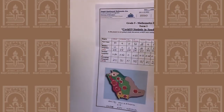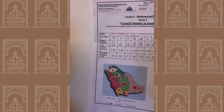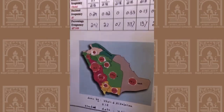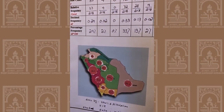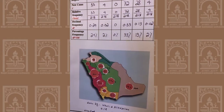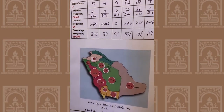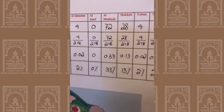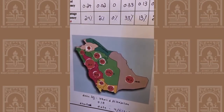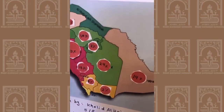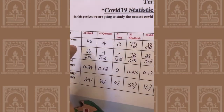Today I'm going to talk about the bubble map. As you can see, the biggest bubbles mean the region has more cases. The biggest bubble is on Al-Medina because it has 72 cases. The second biggest region is Al-Jauf because it has 24% and 53 cases.